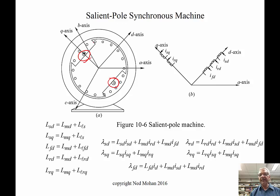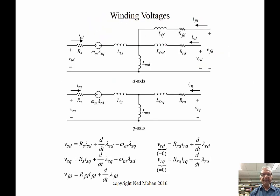On the D-axis, we have three windings: the field winding, the damper D-axis winding, and the stator D-axis winding. But on the Q-axis, we have only two: the Q-axis rotor damper winding and the Q-axis stator winding.